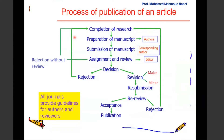So we start from the completion of the research. Once we complete the research, then we prepare the manuscript. We target a particular journal — this is done by the authors. After this, we start to communicate the manuscript through the journal submission system by the corresponding author. Once it is received by the editor, there are two possibilities. Normally the editor assigns reviewers to look at the paper.